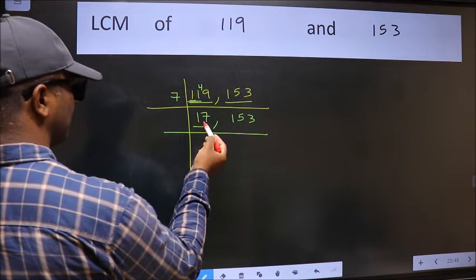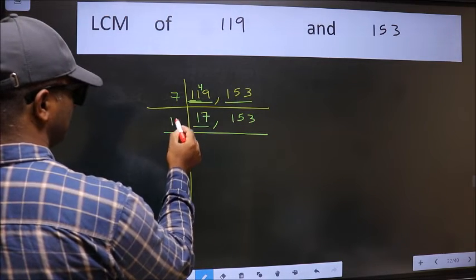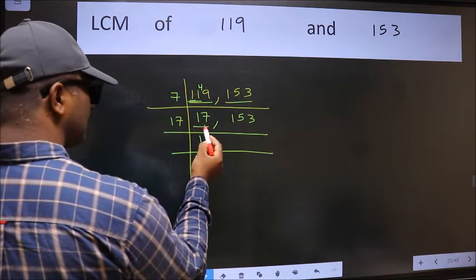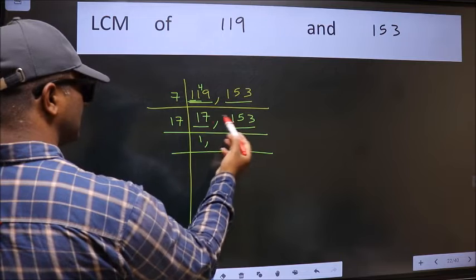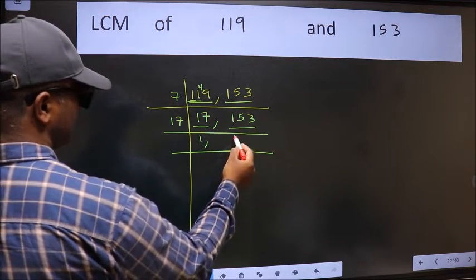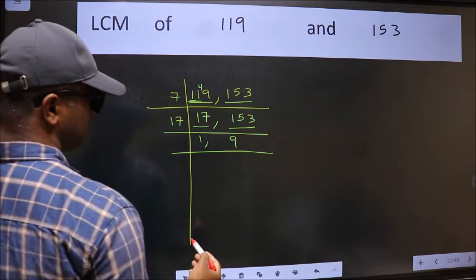Now here we have 17. 17 is a prime number so 17, 1, 17. The other number 153 is divisible by 17. When do we get 153 in 17 table? 17 times 9 is 153.